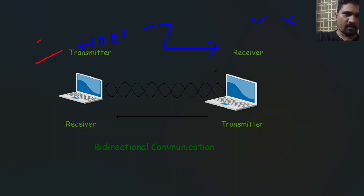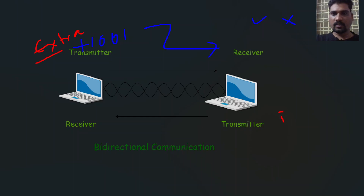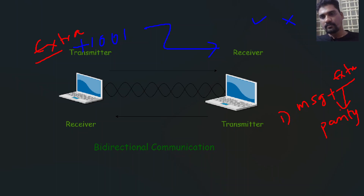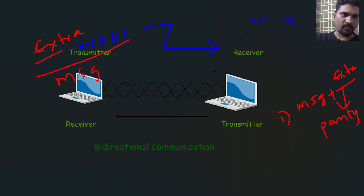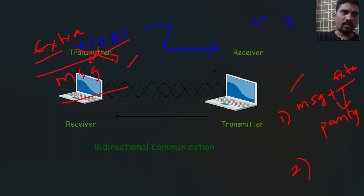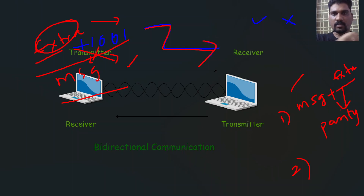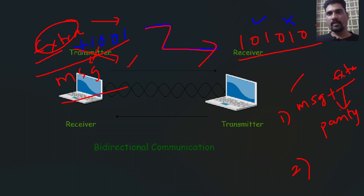By using this extra mechanism, we can identify whether the received information is correct. In Part 1, we have only the message bit value, and we need to add extra bit values called parity bits. The combination of the message bit plus the extra parity bit value is the transmitter code word. In Part 2, the extra bits are already included in the transmitted information.